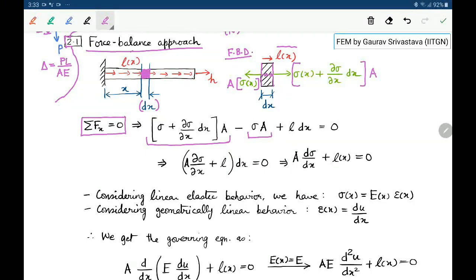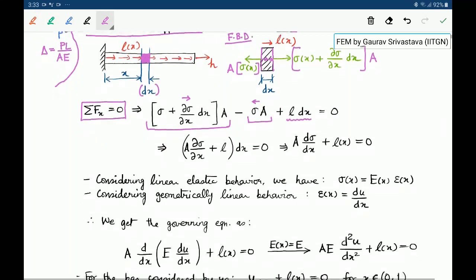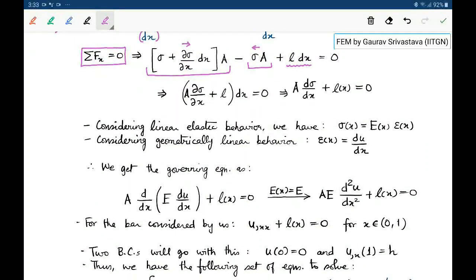This force is in the minus x direction, hence we have a minus sign. This is in the plus x direction and then this L of x is acting along the length in a per meter type of fashion. So the total force becomes L times dx. After we do some simplifications, we come up with the differential equation which governs the mechanics of this bar, which is A d sigma by dx plus L of x equal to 0.